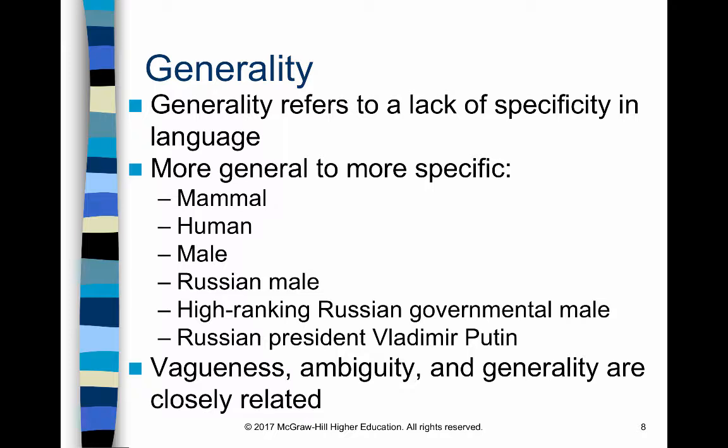'Russian male' — a more specific subset. 'High-ranking Russian governmental male' — now we're getting somewhere, but probably still thousands of people fit that description. 'Russian President Vladimir Putin' — one specific individual. Obviously if you were talking about him you wouldn't refer to him as just a Russian male with no other identifying language. But it does point out that the more detail you provide, the more likely it is that your meaning will be understood.